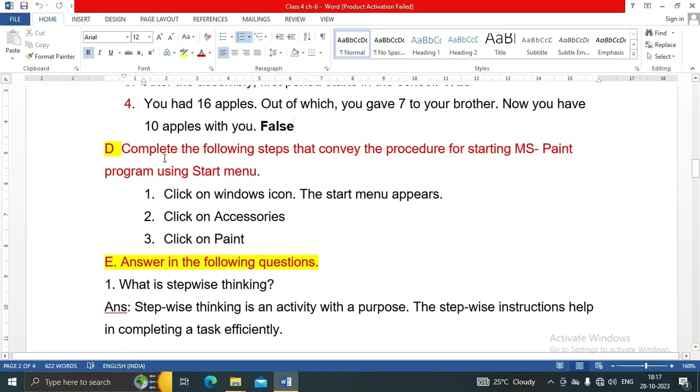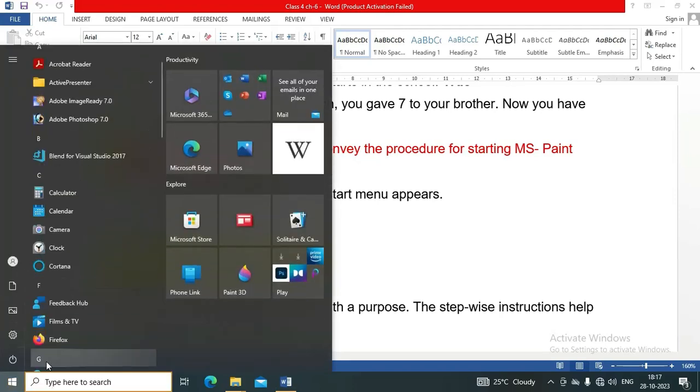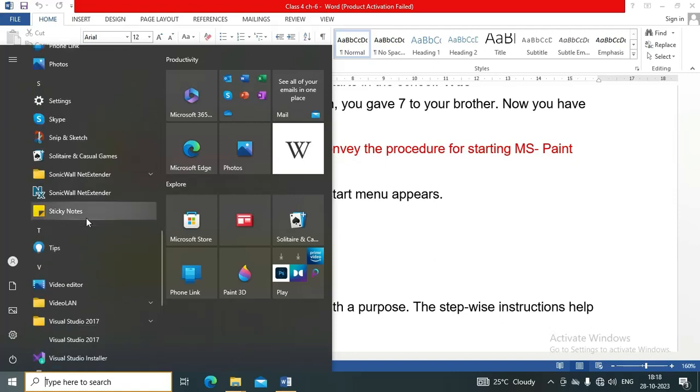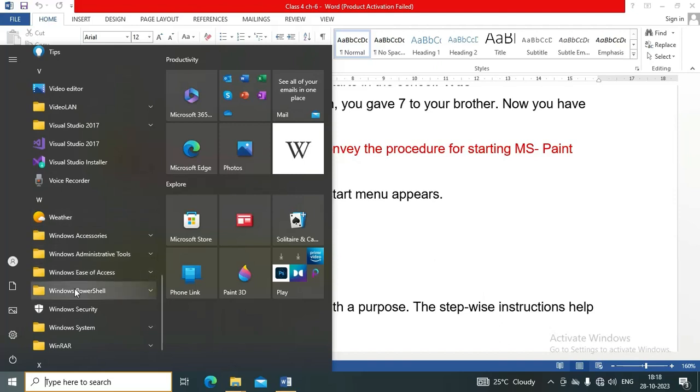Question number D: Complete the following steps that convey the procedure for starting MS Paint program using Start menu. Here are the steps, three easy steps to start MS Paint: Click on Windows icon, the start menu appears. Click on Accessories. Click on Paint. Shall I show it here once again? See, this is the Windows button. Then you can search here also, or go to the Accessories, or simply type Accessories. Here, Windows Accessories, and this is the Paint. In this way you can start Paint.